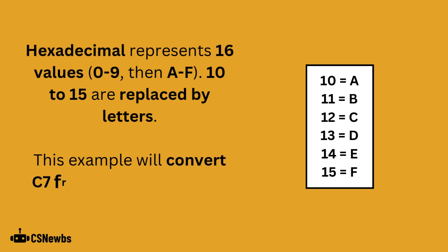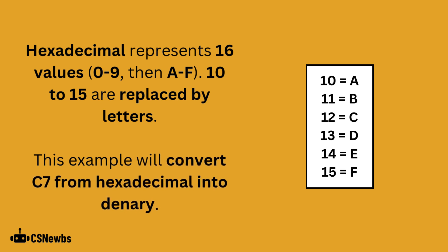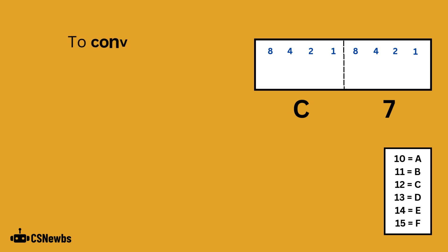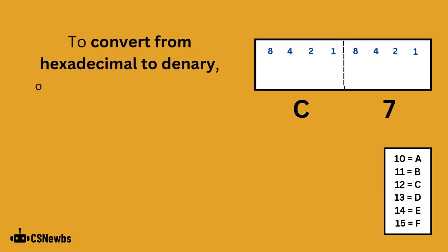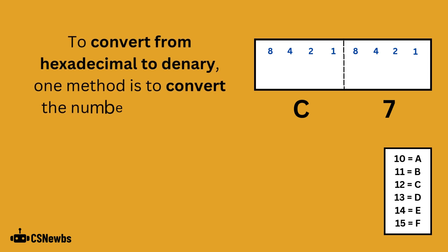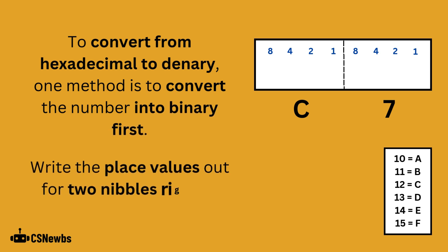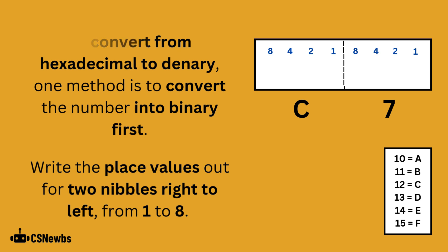This example will convert C7 from hexadecimal into decimal. To convert from hexadecimal to decimal, the traditional method is to convert the number into binary first. Write the place values out for two nibbles, right to left: 1 to 8 and 1 to 8.